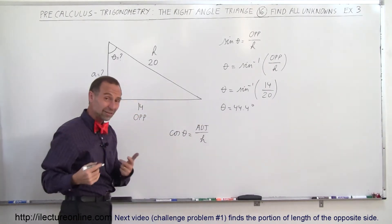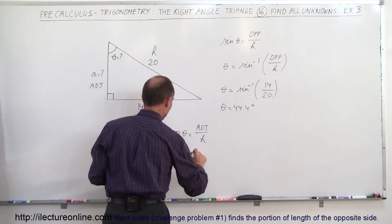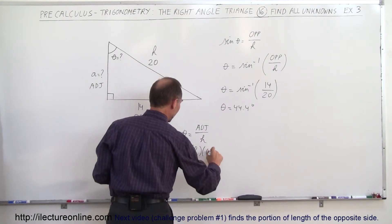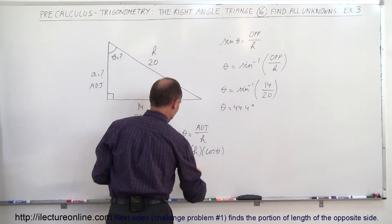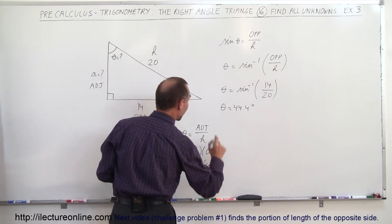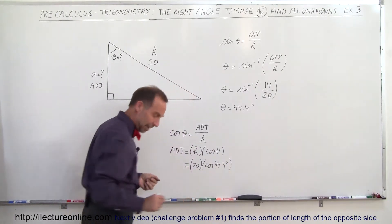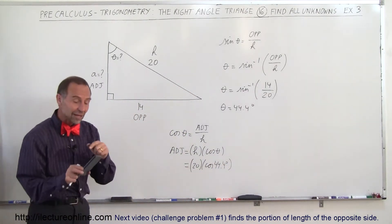Since we're looking for the adjacent side, we can rearrange that equation: the adjacent side equals the hypotenuse times the cosine of theta. In this case, the hypotenuse is 20, and we take the cosine of the angle we just found, 44.4 degrees.